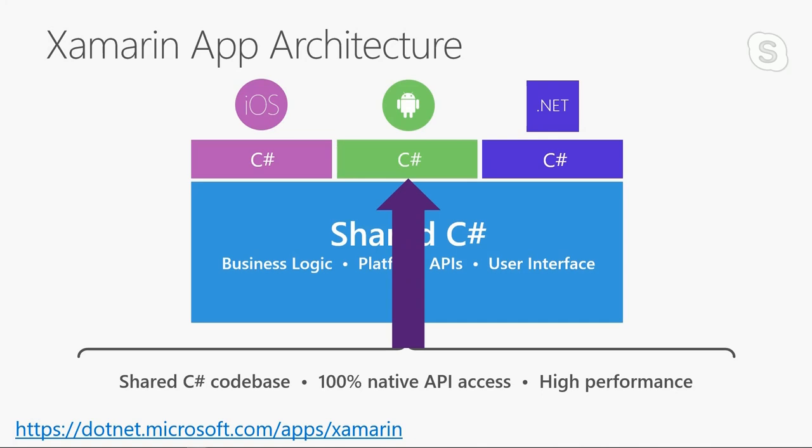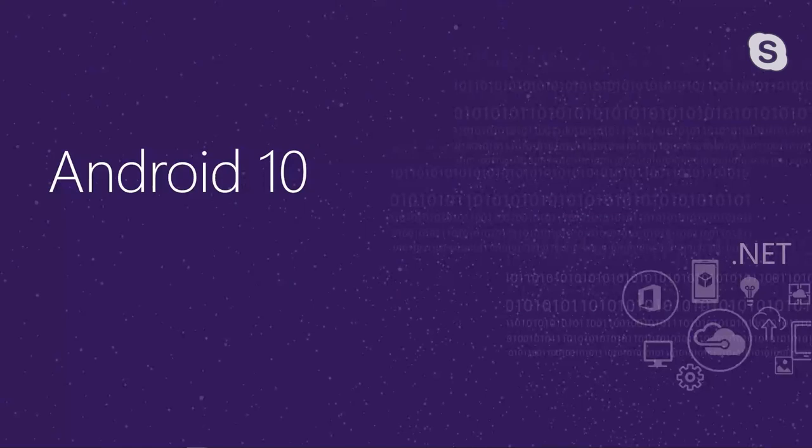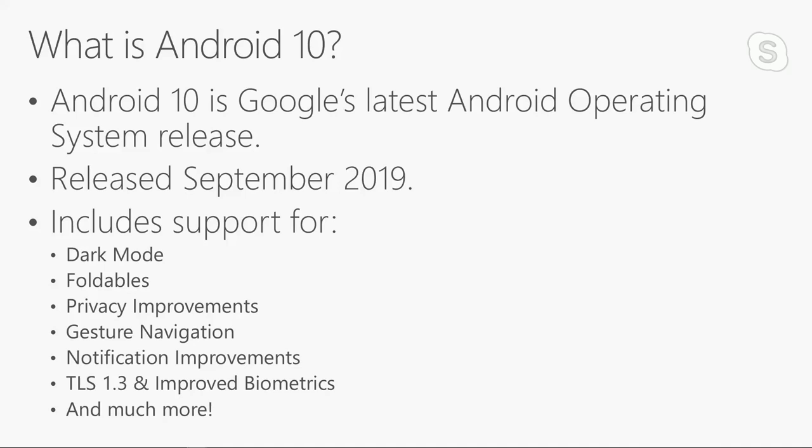I just want to talk about some of the new features and show you how you can get started with those today. So Android 10, which was released earlier this September, is Google's latest operating system. Hopefully if you have an Android device today, you've updated to it. Let me know your feedback if you like Android 10 or not. It was released in September — this is kind of a yearly lifecycle with Android releases, usually one per year, sometimes two. And this release includes quite a bit of support. Like iOS, it includes a dark mode. However, Android is a little more unique and includes foldables — devices that allow you to fold. There are some pretty cool foldables out on the market today, and it's still only in its infancy.